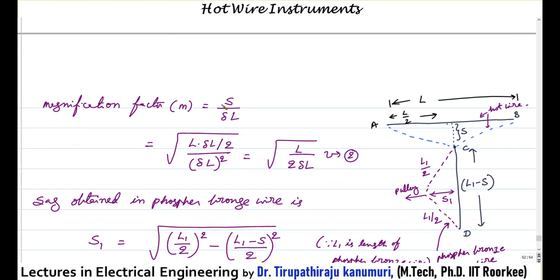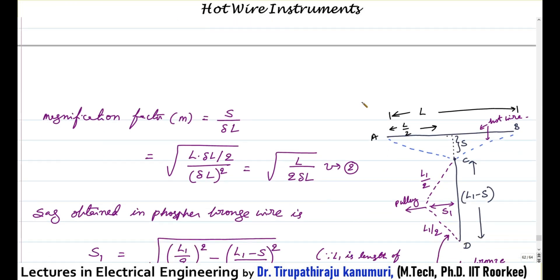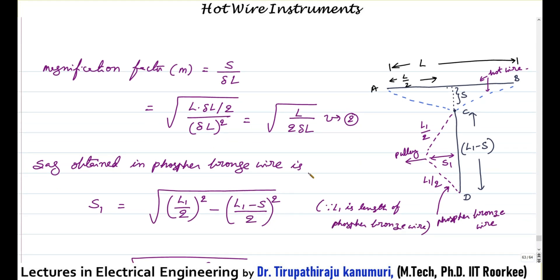The magnification due to the sag is sag S divided by delta L. S equals the square root of L times delta L divided by 2, divided by delta L. When delta L is brought inside it becomes delta L squared, giving the square root of L divided by 2 times delta L. This is how much delta L is magnified — for a change of delta L, it is magnified to the square root of L divided by (2 delta L) times the original value of delta L.